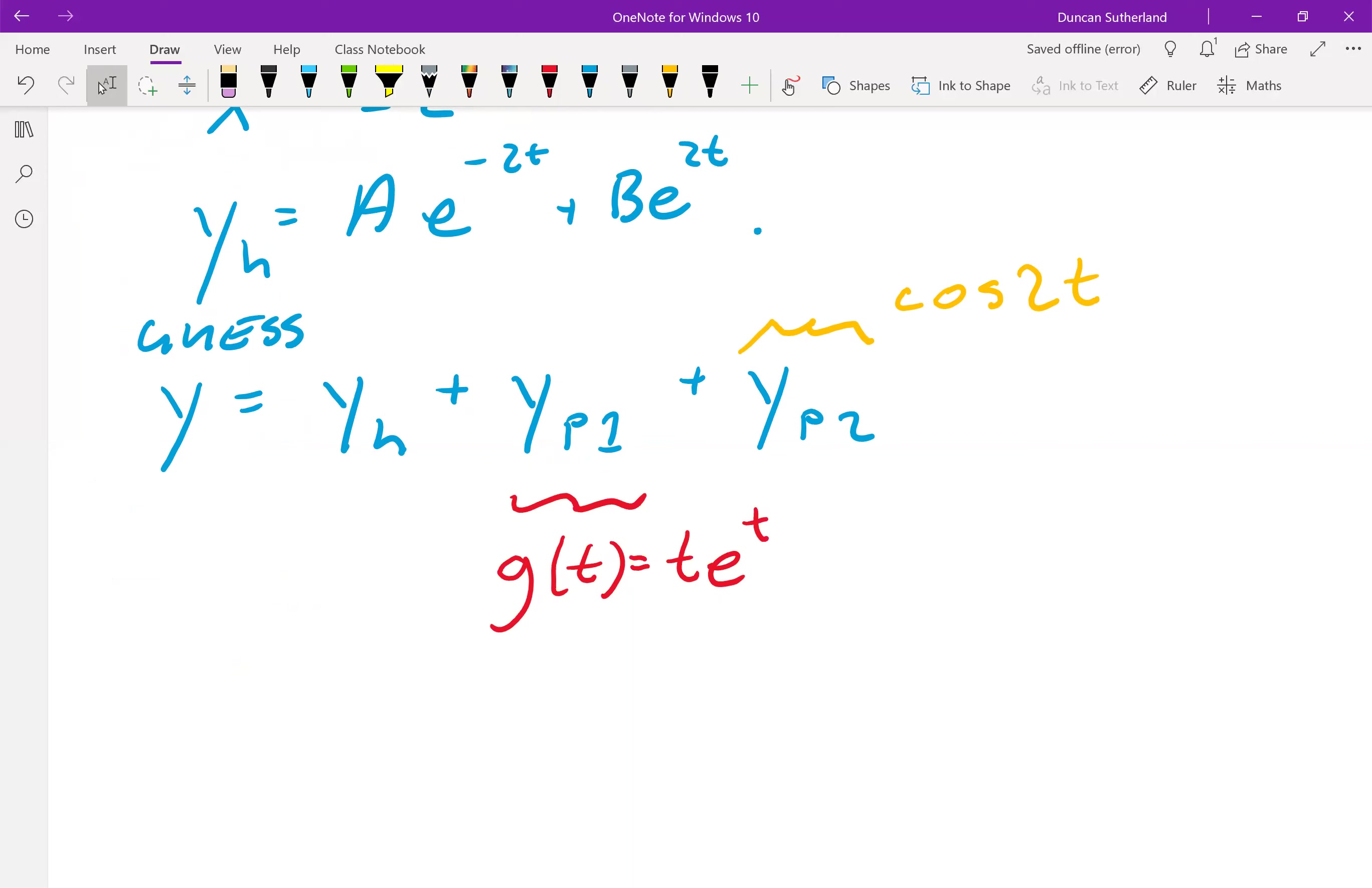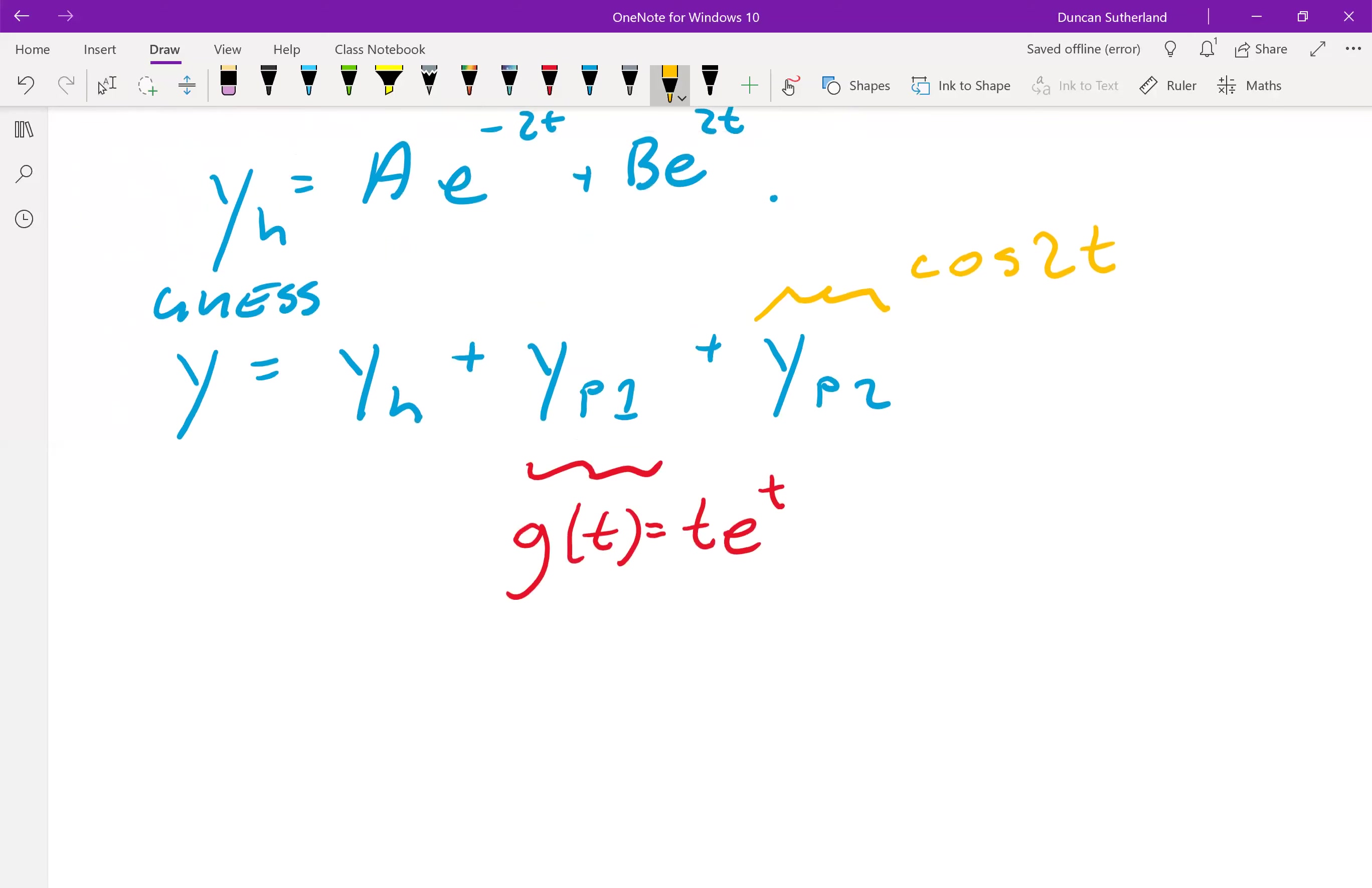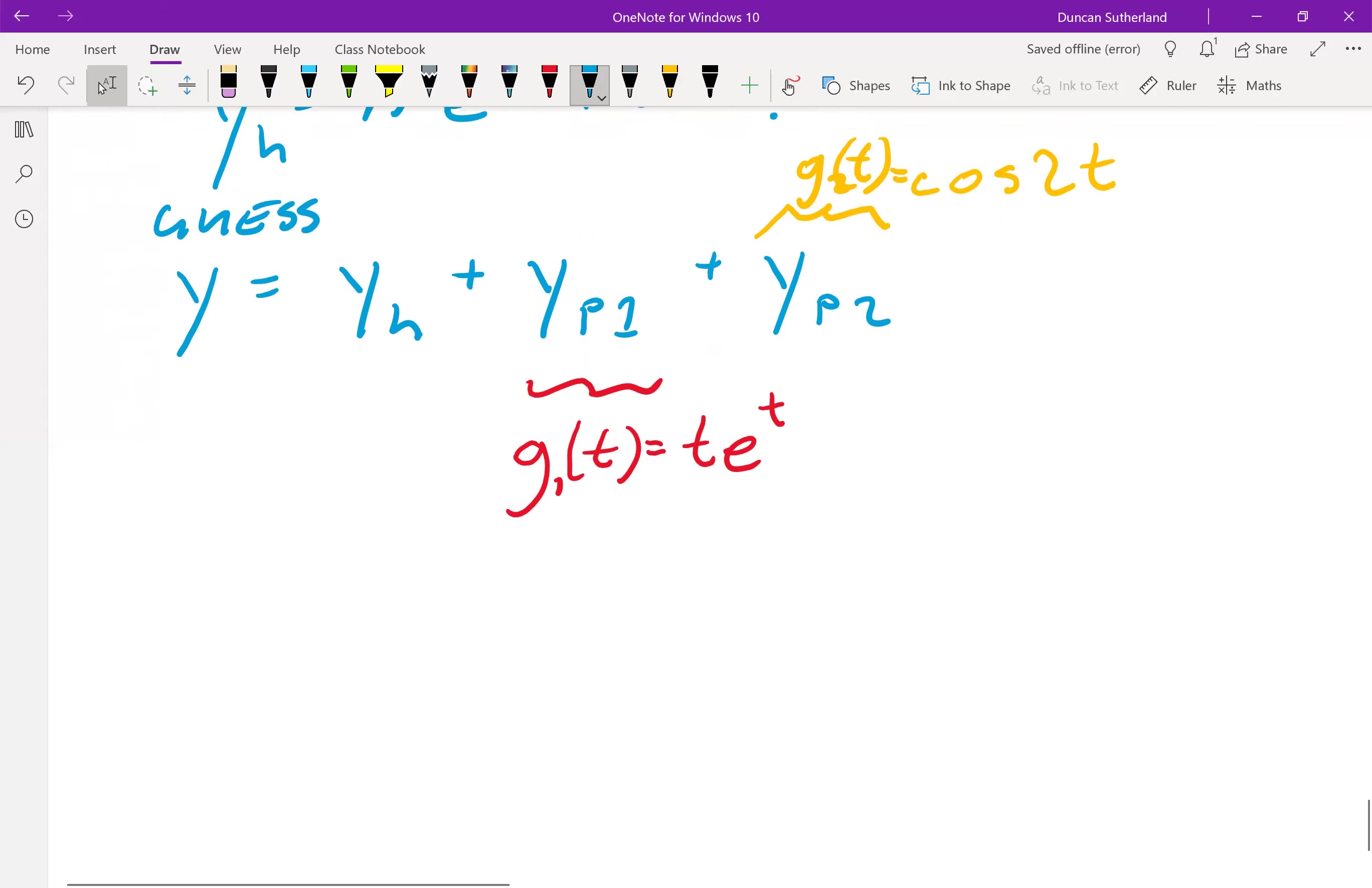However, we don't have to do the substitution in two parts. We can just do it in one big go. We just have to figure out. So this will be like g1 of t. This will be g2 of t. So we just have to write down our guess.